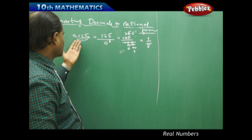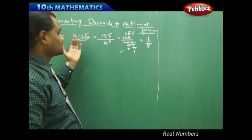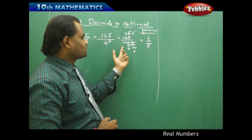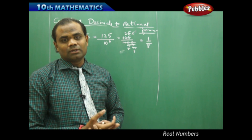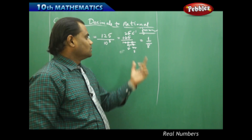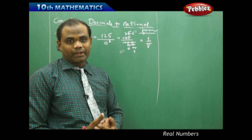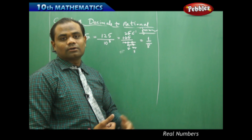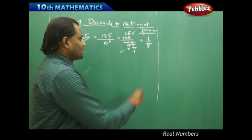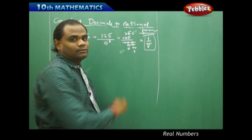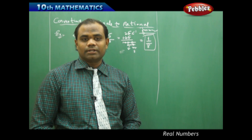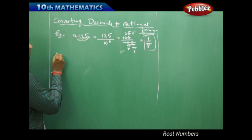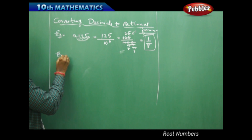So the rational number corresponding to the decimal 0.125 is either 125 by 1000, or when simplified further, the most simplified answer is 1 over 8. This is the rational number. Now let's take another example which supports conversion from decimal to rational number.